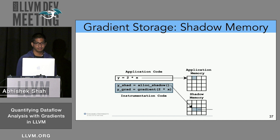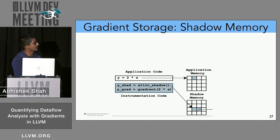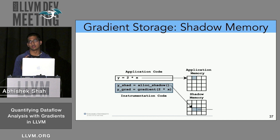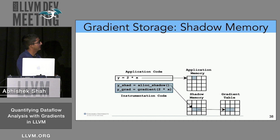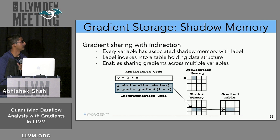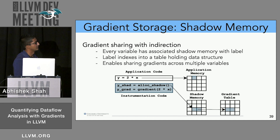Once gradients are computed, we need to store them. For every application-level memory variable, there is a corresponding gradient in shadow memory. Rather than directly copying the gradient for every single variable — since most operations are just load and store transfers — we factor gradients out into a gradient table and share them. Variables store an ID that indexes into the actual gradient, enabling multiple variables to share the same gradient entry and reducing memory usage.